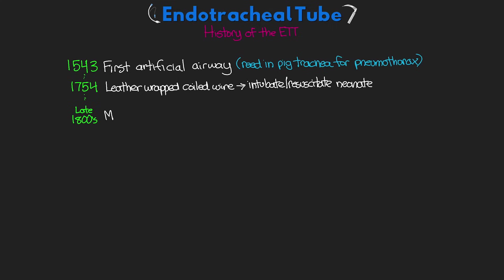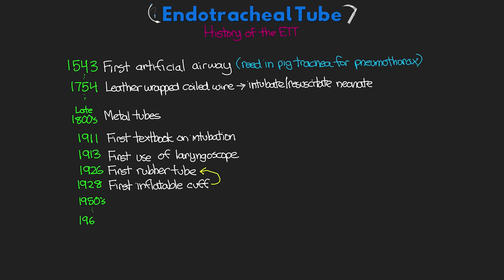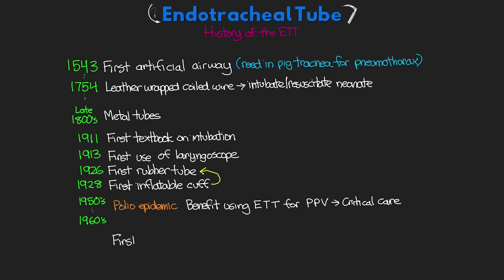In the late 1800s, various metal tubes were used to bypass mass obstructions in the throat, reducing the need for tracheostomy tubes, administering anesthesia, and helping prevent pulmonary collapse during thoracic surgeries. The first textbook on tracheal tube intubation was written in 1911, and the first documented use of a laryngoscope to assist placement was described in 1913. In 1926 the first rubber tube was developed, followed in 1928 by the first inflatable cuff. The polio epidemic of the 1950s and 60s showed the benefit of using the ET tube to deliver positive pressure ventilation, paving the way for its use in critical care. Our first PVC tubes were introduced in the 1970s and have become the standard today.